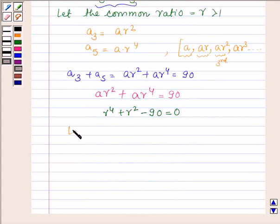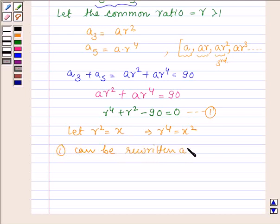Now let r² equal x. So let this be equation number 1. Equation 1 can be rewritten as x² plus x minus 90 equals 0.